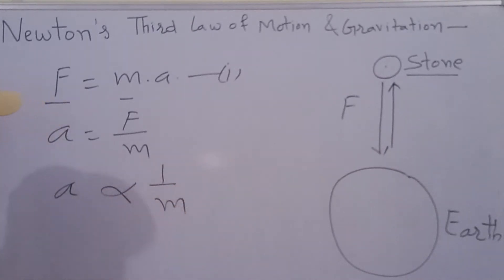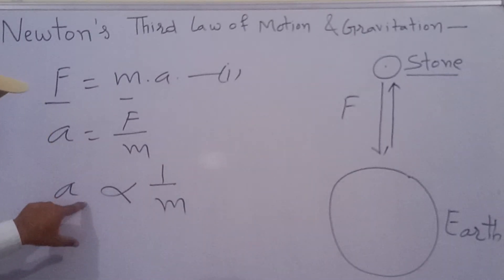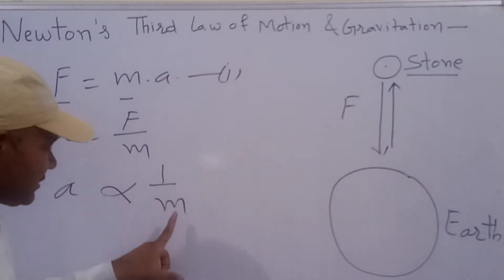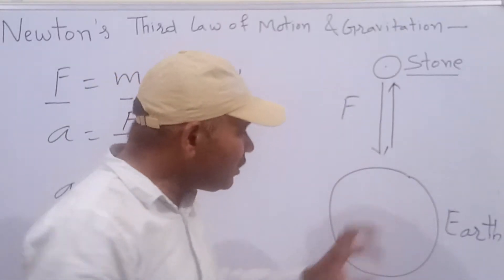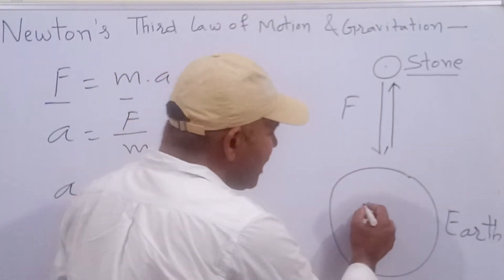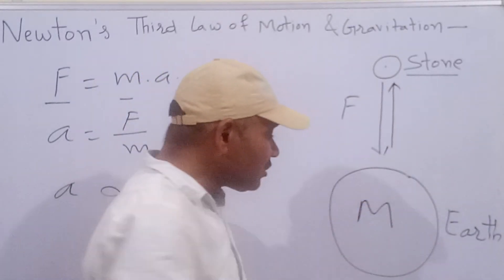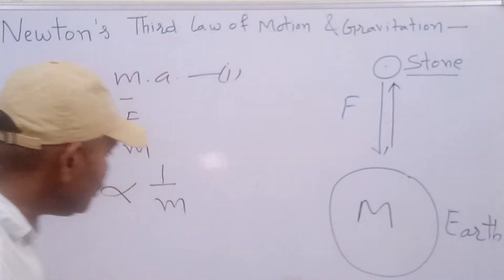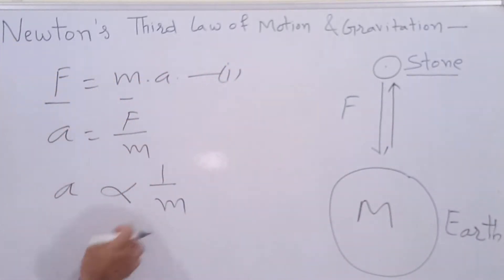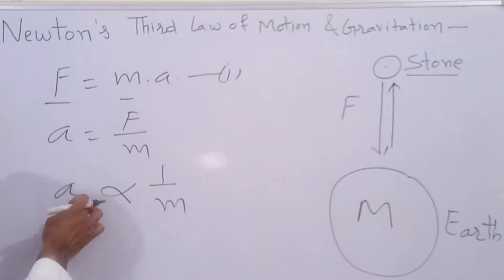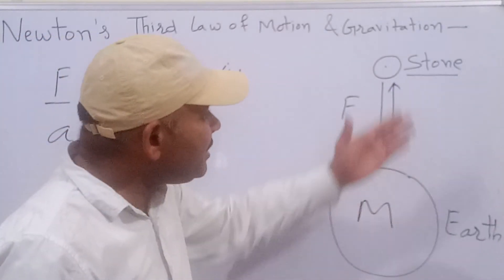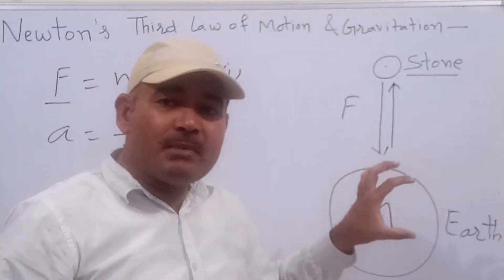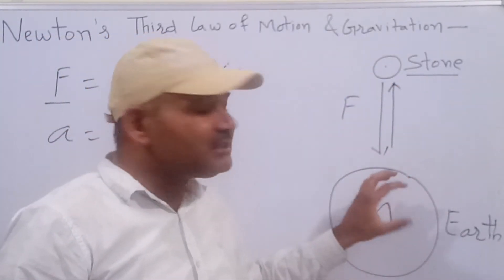हम इस equation से देख रहे हैं जो ये acceleration है, it is inversely proportional to the mass — mass ज्यादा है तो acceleration कम होगी, mass कम है तो acceleration will be more। क्योंकि Earth का mass बहुत ज्यादा है, तो Newton's second law के according acceleration बहुत बहुत कम होगा, negligible होगा।